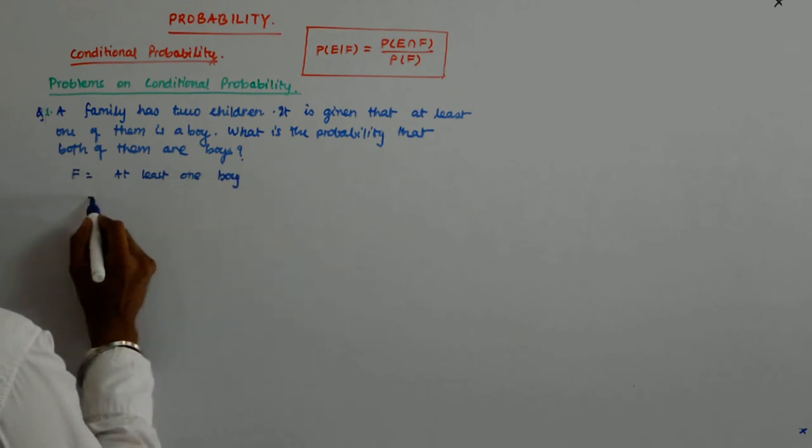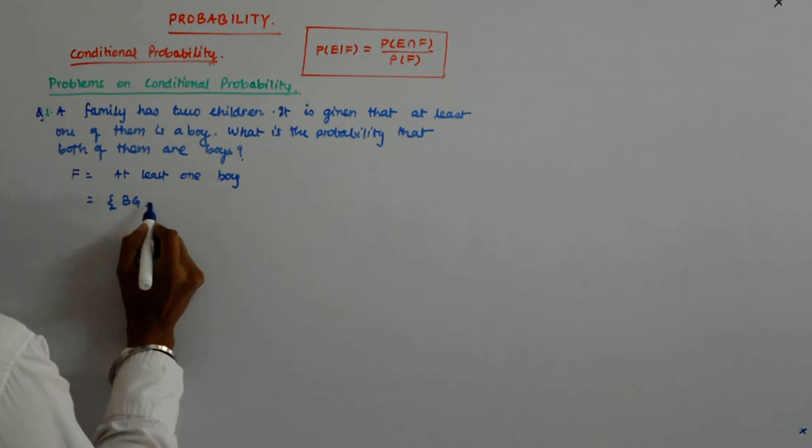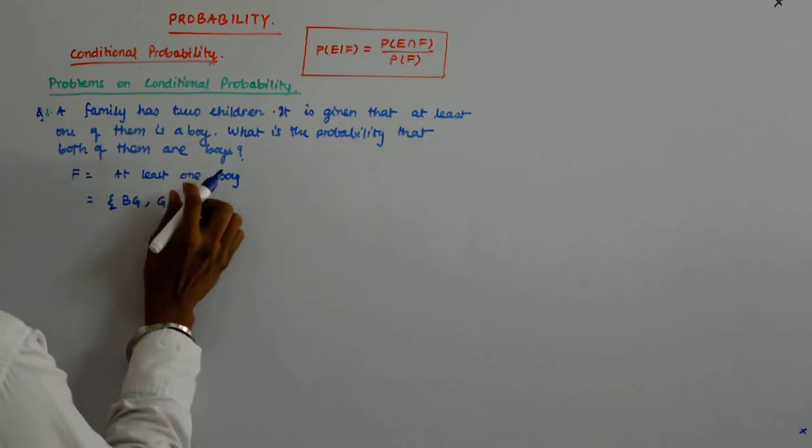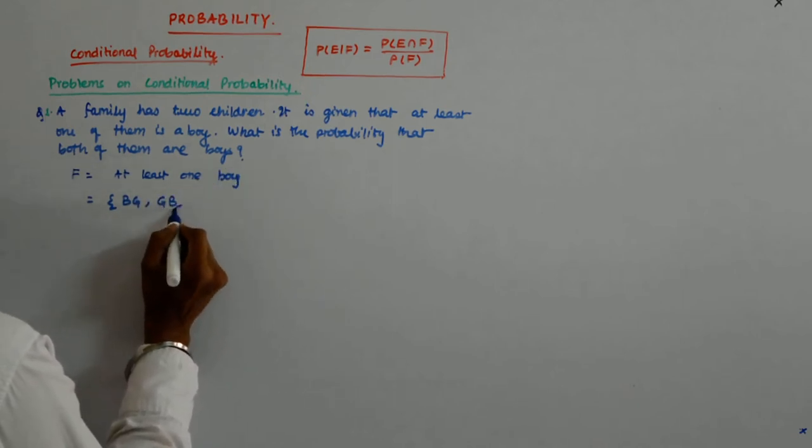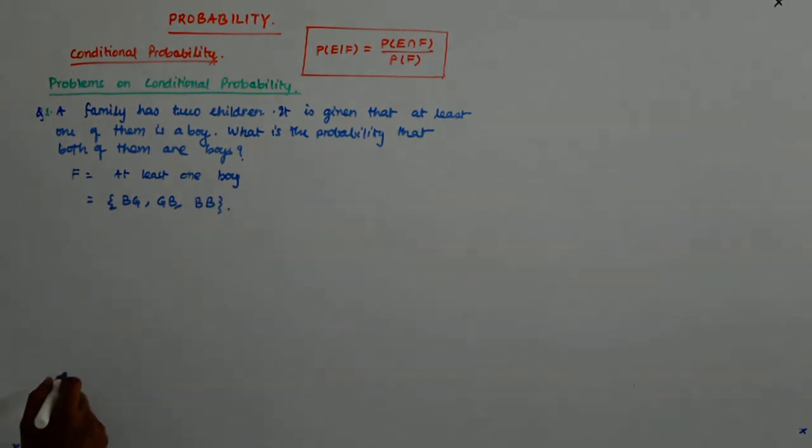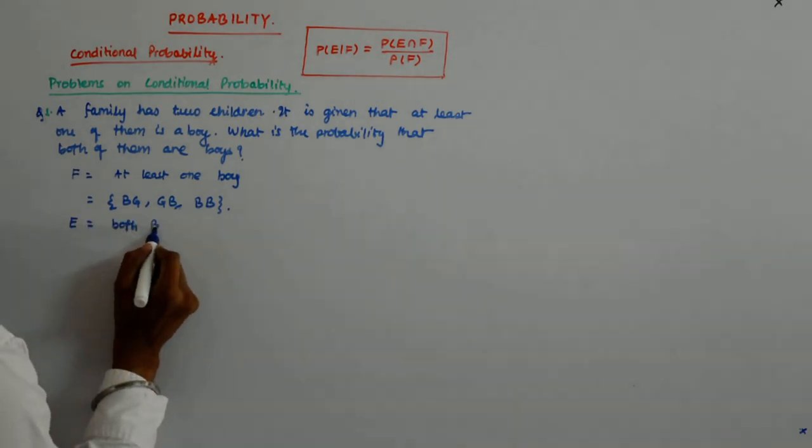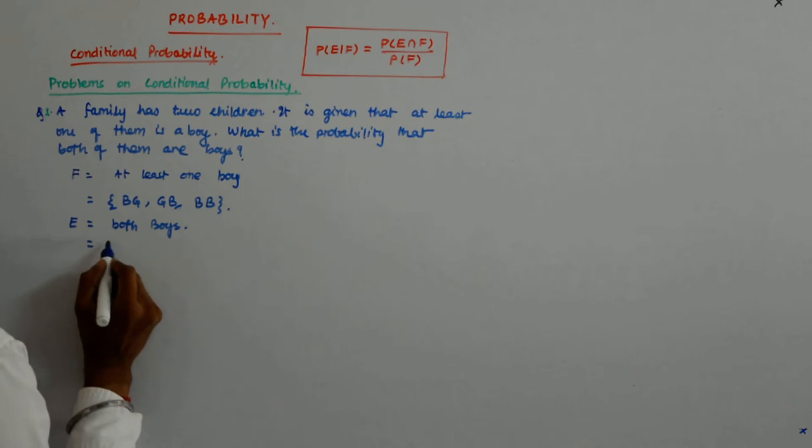So what is that? That is B, G, G, B, and B, B. And E is both boys, which is B, B.